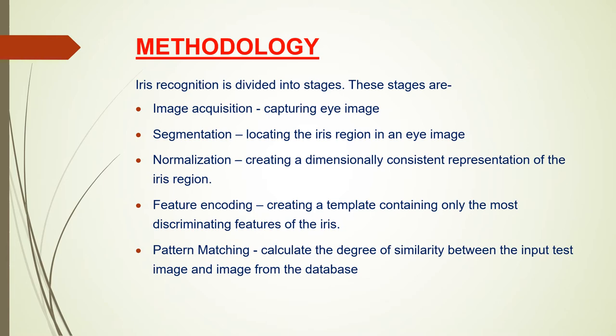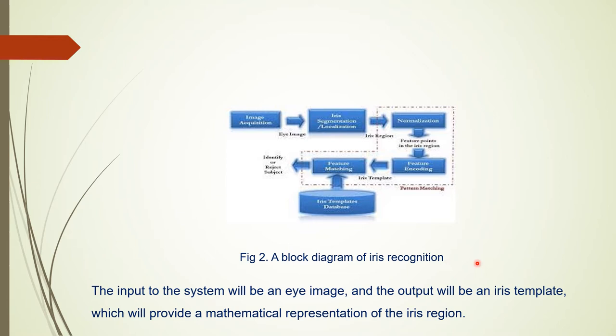Here is a block diagram of iris recognition that makes the whole process clearer. First, image acquisition takes place, giving us an eye image. Then iris segmentation or localization takes place, giving us the iris region. Then normalization happens, followed by feature encoding, which gives us an iris template. Then feature matching calculates the degree of similarity between the generated iris template and the iris template stored in the database, and then the result is out. The input to the system is an eye image, and the output is an iris template — a mathematical representation of the iris region.